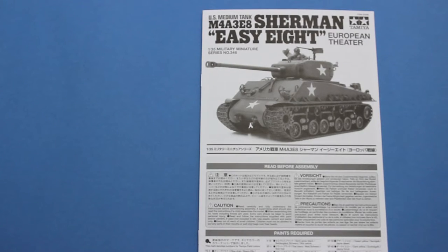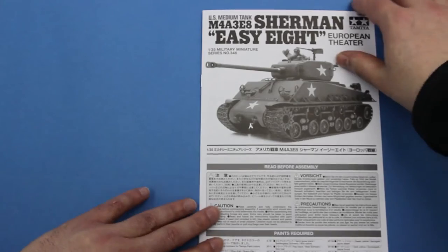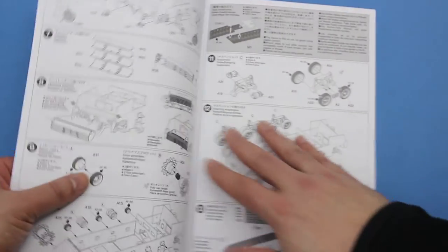Tamiya instructions are generally some of the clearest you'll find. And these are no exception to that. There's a nice photo here of the finished factory model.